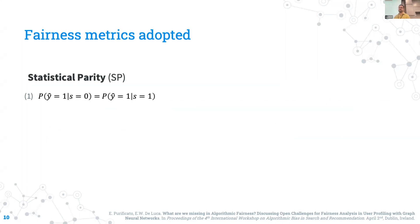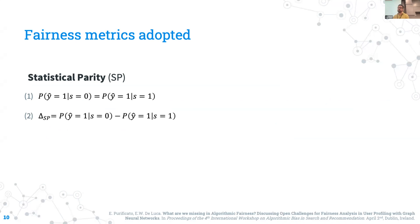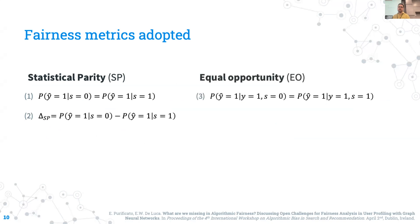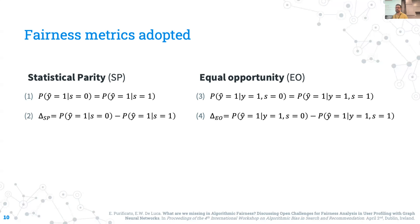The first fairness metric is statistical parity. Here is the common definition, and the difference of the two sides of the equation gives us a score. This score is usually used with the absolute value of this quantity. The second metric adopted is equal opportunity, and similarly we use both the common definition and the score.